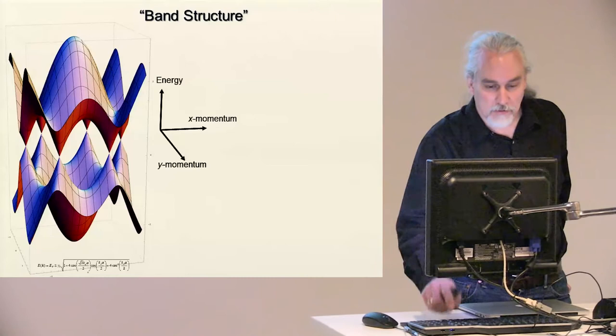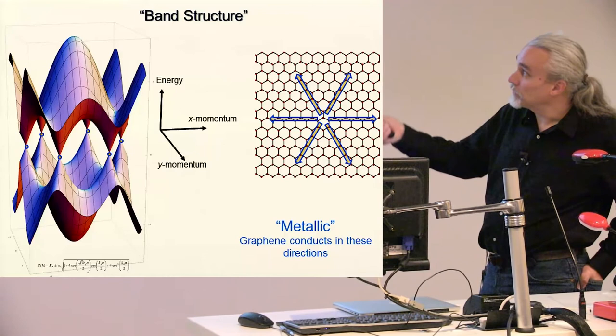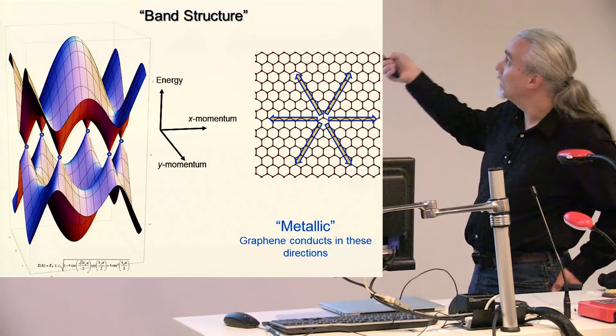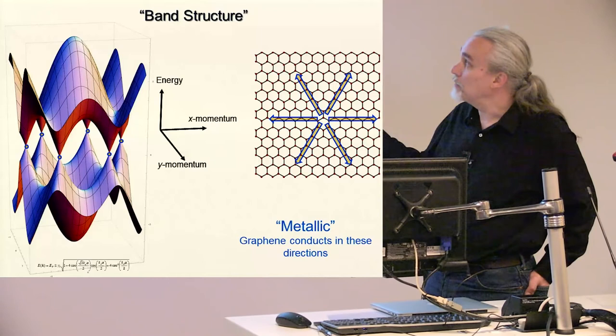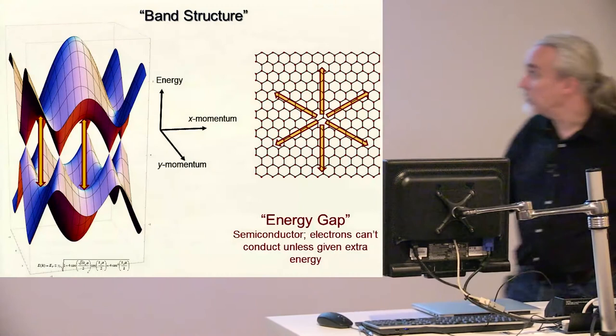Down here, this turns out to be the energy at which we fill electrons up. The highest energy electrons in neutral graphene will be at these points, and these six points correspond to six directions. Those six directions are along these zigzag chains, and they're the directions that current can flow in graphene. There really are these six directions, and here at these points graphene is what we would call metallic—it conducts electricity.